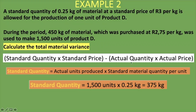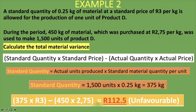Now we multiply the standard quantity of 375 kg by the standard price of 3 rand, then minus the actual quantity of 450 kg times the actual price of 2 rand 75 cents. This gives us 112 rand 50 cents, and it is unfavorable — because our actuals were more than our standards, meaning we used more money than we planned. We spent 112 rand 50 cents more than we should have according to our standards.